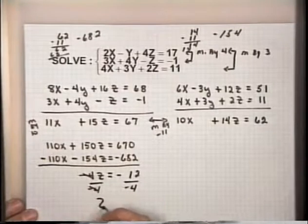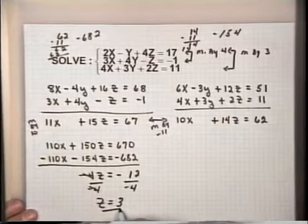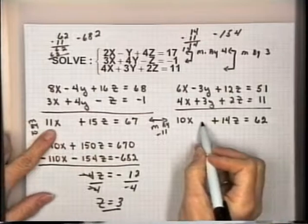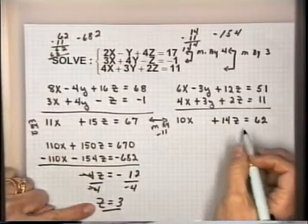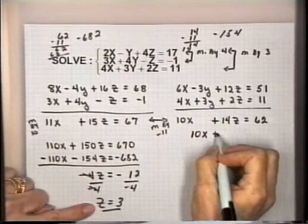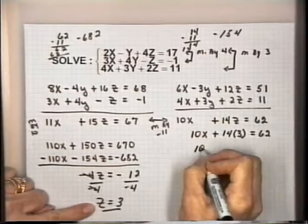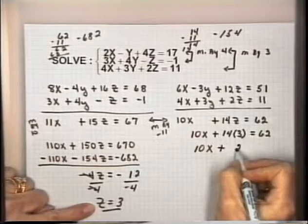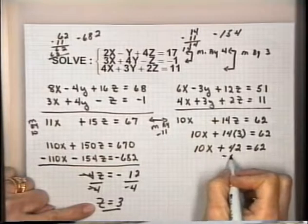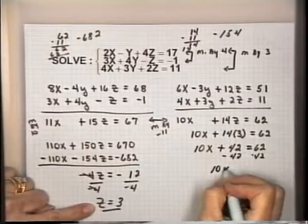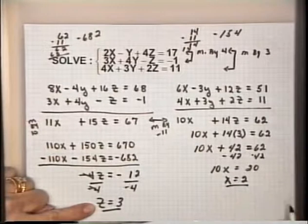Now that z equals 3, substitute back into the equation 10x plus 14z equals 62. Replacing z with 3: 10x plus 14 times 3 equals 62; 10x plus 42 equals 62. Subtracting 42 from both sides gives 10x equals 20. Dividing by 10, x equals 2.